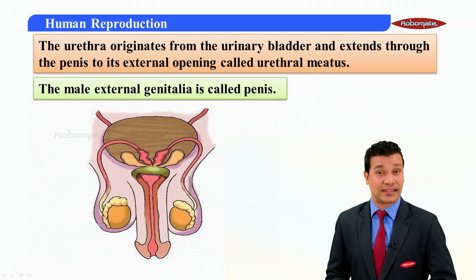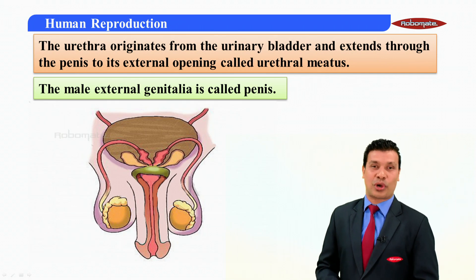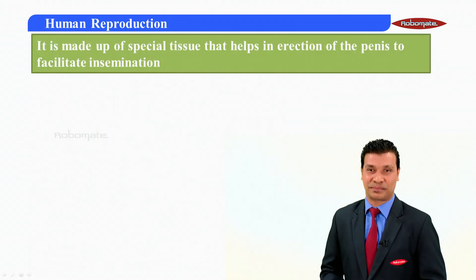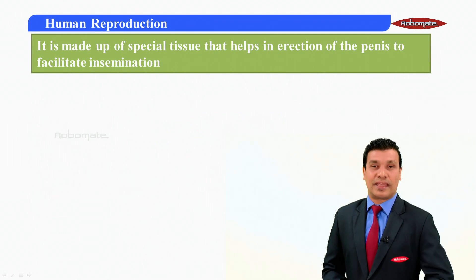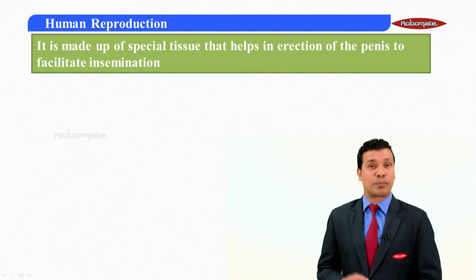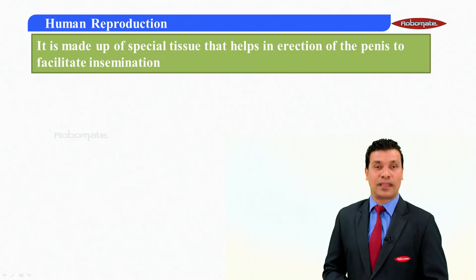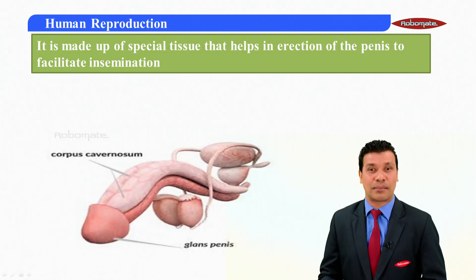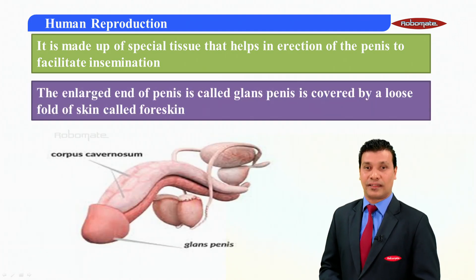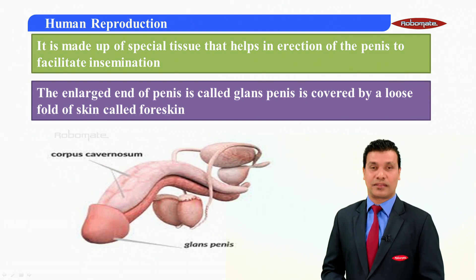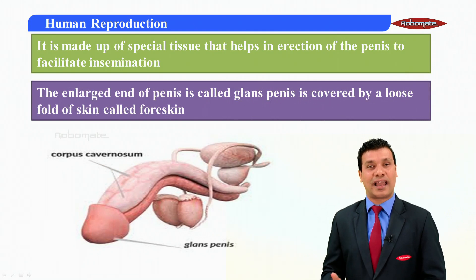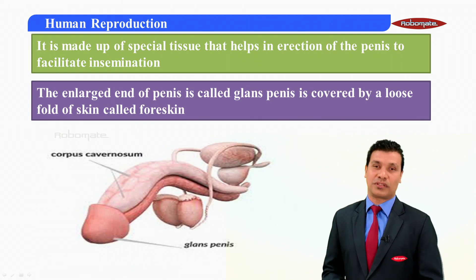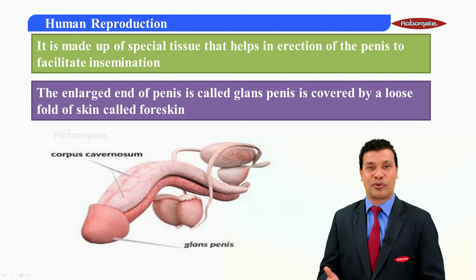The male external genitalia is also called the penis. The penis is made up of special tissue that helps in the erection of the penis to facilitate insemination. The enlarged end of the penis is called the glans penis, which is covered by a loose fold of skin called the foreskin.